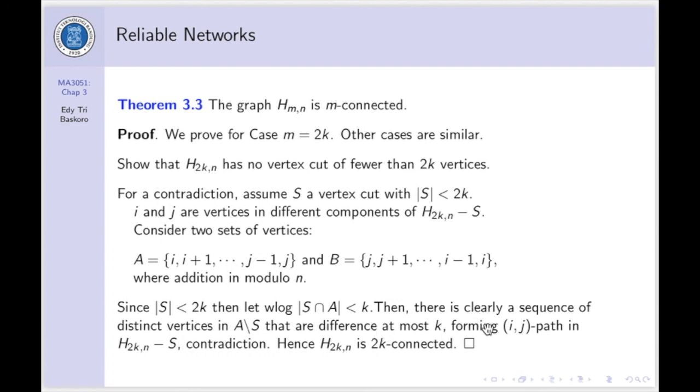That means, vertices I and J are connected after you remove S. So, a contradiction. Because, we assumed above that S is a vertex cut. Hence, this graph must be 2K-connected.